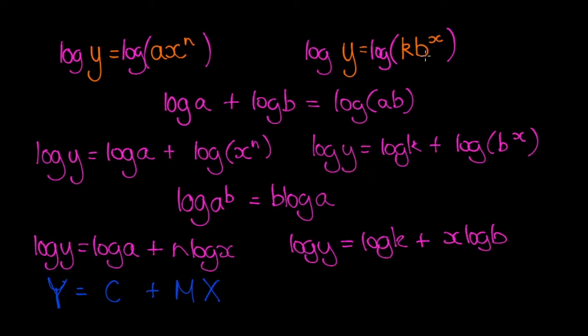If we do the same thing for y equals kb to the x, we're going to get again plot log y on the y axis. And this time we're putting x on the x axis. So we're plotting log y against x, which means that log b is your gradient m and log k is the y intercept. In fact, having coded the data, we're able to use linear regression because we end up with two straight lines.